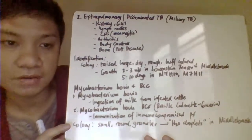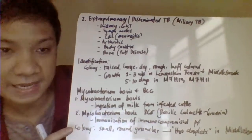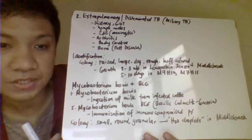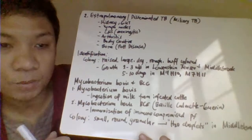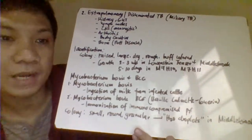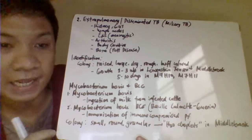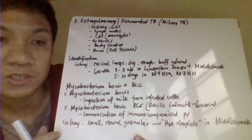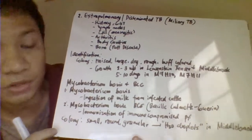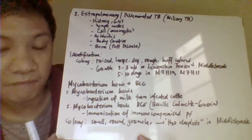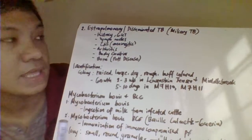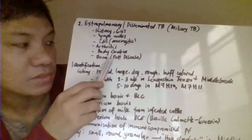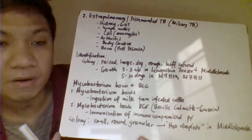Another manifestation is extra-pulmonary or disseminated — miliary — tuberculosis, where infection goes beyond the lungs. The bacteria disseminate through the bloodstream via hematogenous spread to other body parts: the kidneys, genitourinary tract, lymph nodes, CNS, joints, or bones. Infection of the spine is called Pott's disease.